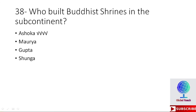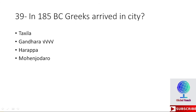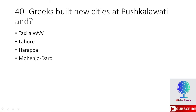MCQ 38: Who built Buddhist shrines in the subcontinent — Ashoka, Maurya, Gupta, or Shunga? The right option is Ashoka. MCQ 39: In 185 BC, Greeks arrived in which city — Taxila, Gandhara, Harappa, or Mohenjo-daro? The right option is Gandhara. MCQ 40: Greeks built new cities at which locations — Pushkulawati and Taxila, Lahore, Harappa, or Mohenjo-daro? The right option is Taxila. Greeks built new cities at Pushkulawati and Taxila.